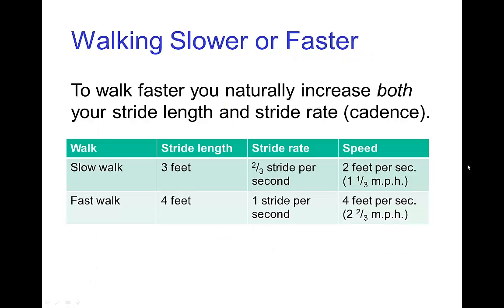So when a character is walking quickly, the natural way to walk faster is to increase both the length of the stride—or length of the step if you prefer—and the rate at which the stride is taken, in other words, the cadence or how many steps per second. So a typical slow walk stride length might be three feet, the stride rate might be two thirds of a stride per second which would be a speed of two feet per second, so this is a fairly slow walk. For a typical fast walk, the stride length would increase, the stride rate would increase, and increasing both of those significantly increases the walking speed.